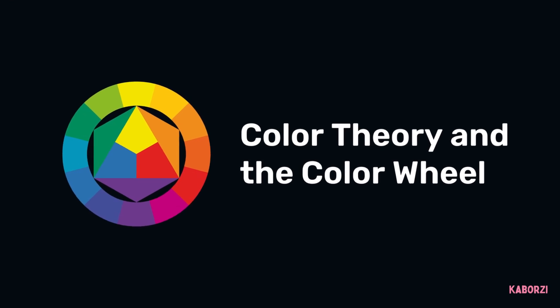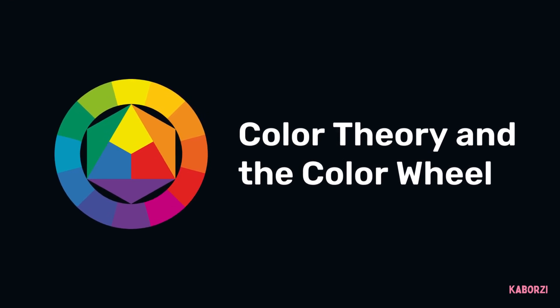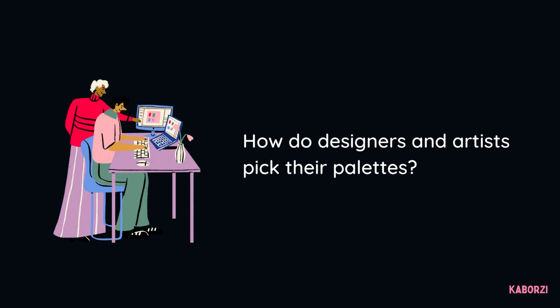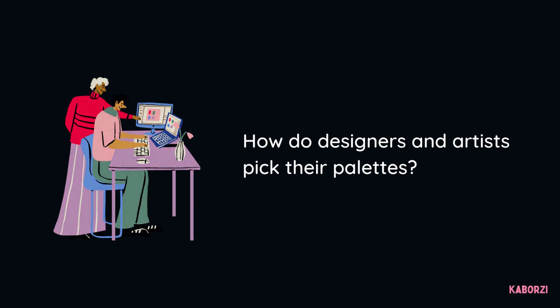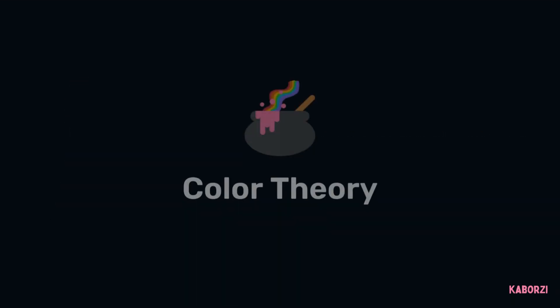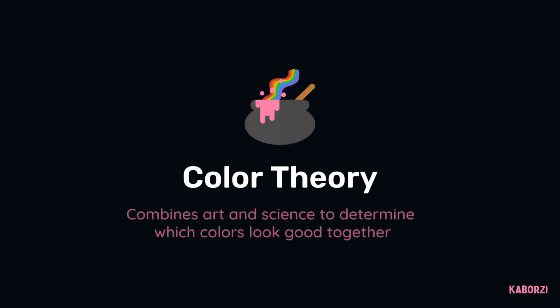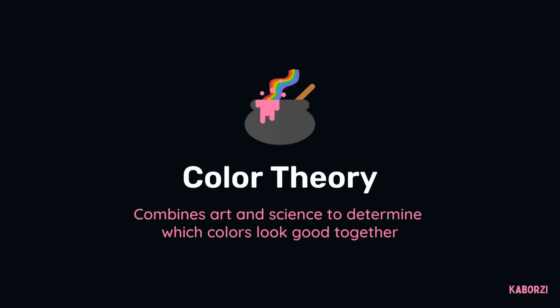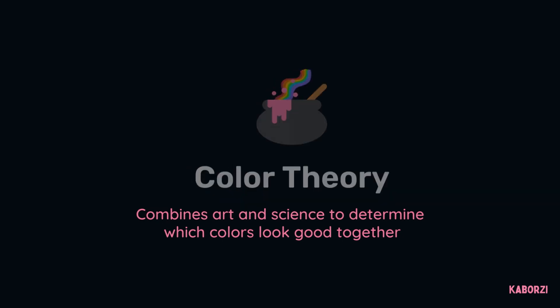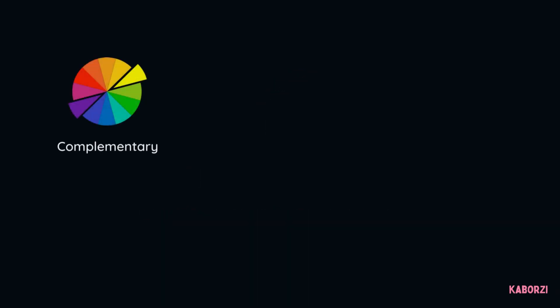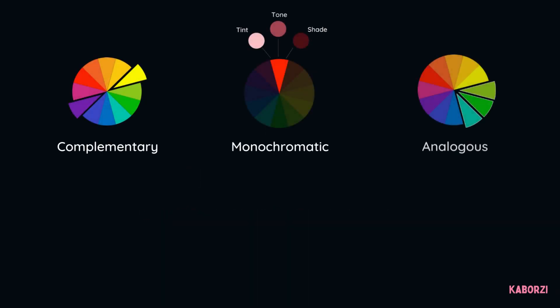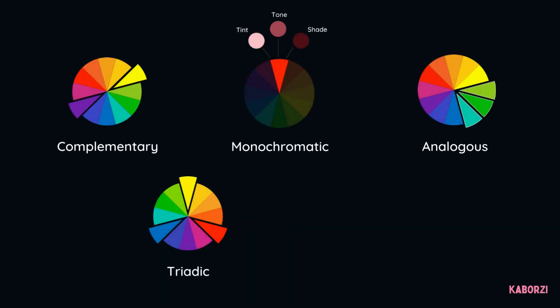Color Theory and the Color Wheel. Have you ever wondered how designers and artists find and select the perfect colors to use for their work? The secret is Color Theory. Color Theory combines art and science in a practical way to determine what colors look good together, as well as how various colors can be mixed and matched to achieve various effects.